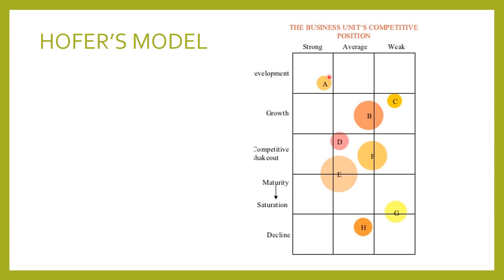SBU H, with a moderately average competitive position and in the decline stage of the industry life cycle, needs to be divested. If it were in a weak positioning like SBU G, it should be completely divested immediately to arrest any cash loss, since it is a position of losing money for the company. The revival of the strategic business unit is not suggested because it is quite difficult at this stage.